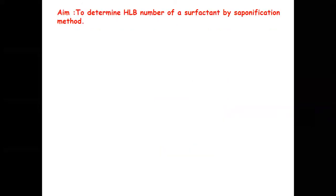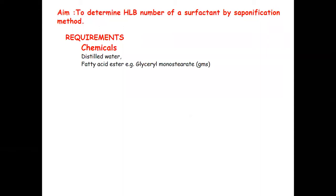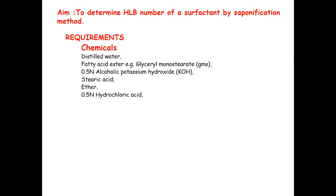Aim of experiment: to determine the HLB number of surfactant by saponification method. Requirements — chemicals: distilled water, fatty acid esters (glyceryl monostearate), 0.5 normal alcoholic potassium hydroxide, stearic acid, ether, 0.5 normal hydrochloric acid, 0.1 normal sodium hydroxide, and phenolphthalein indicator.